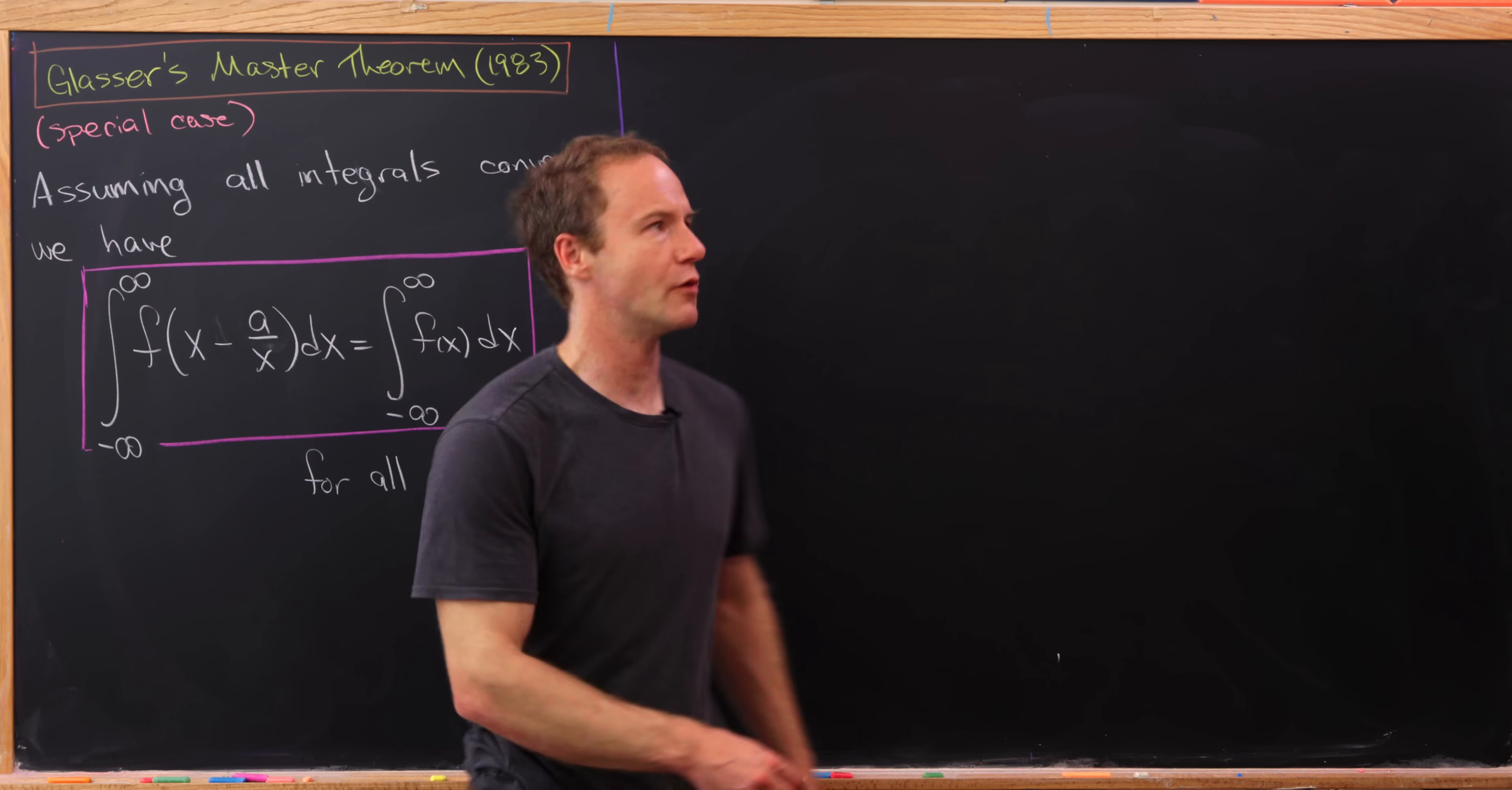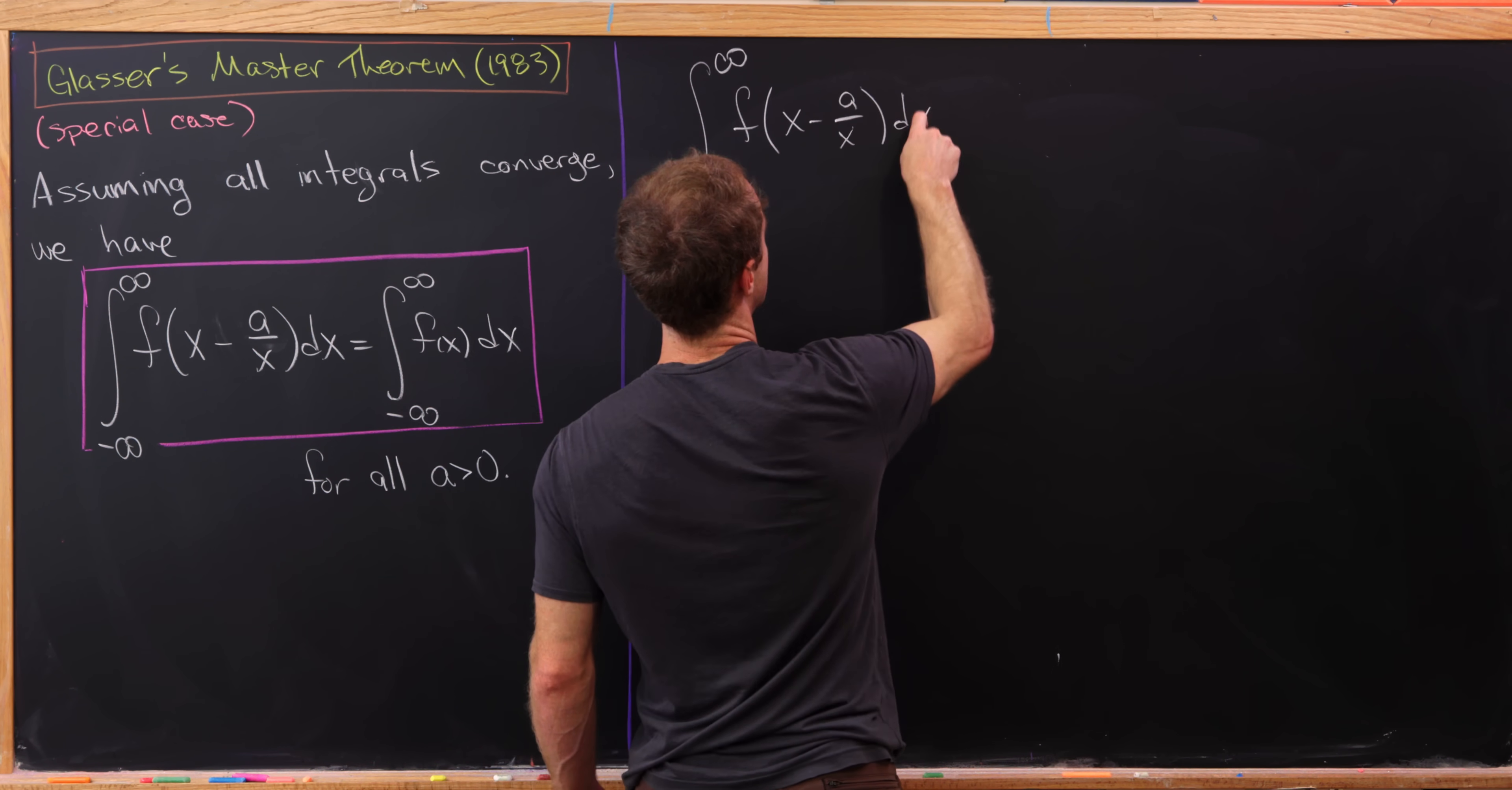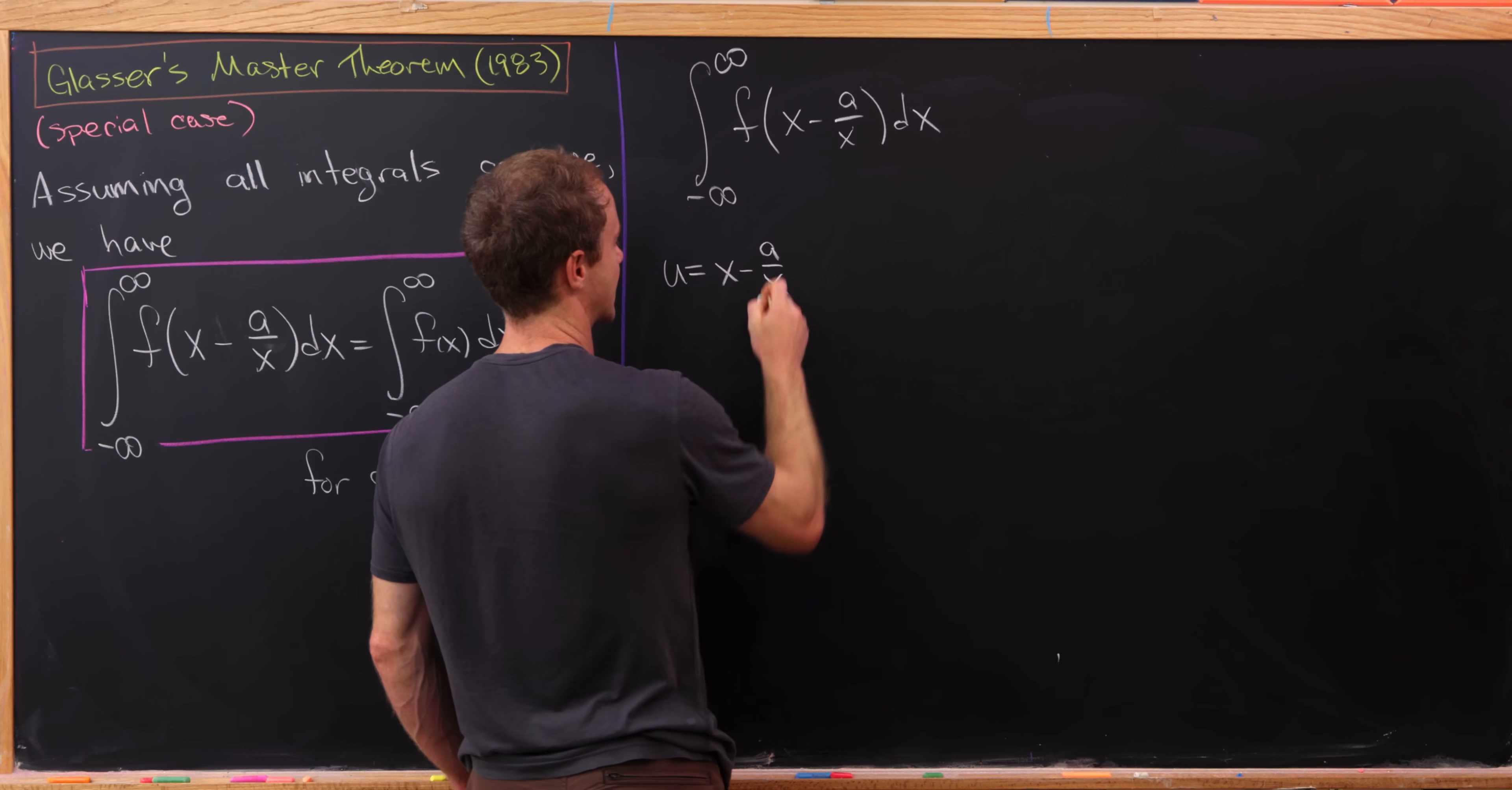Let's see how we might do this. What's great about this is you make a substitution that is really just staring you in the face. So let's start with this left hand side. We're going to start with a substitution that's just looking straight at us, and that would be the substitution where u is equal to x minus a over x.